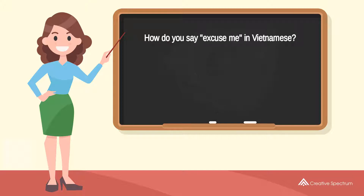How do you say 'excuse me' in Vietnamese? Xin Lỗi. Try to pronounce the word: Xin Lỗi. Repeat the word: Xin Lỗi.